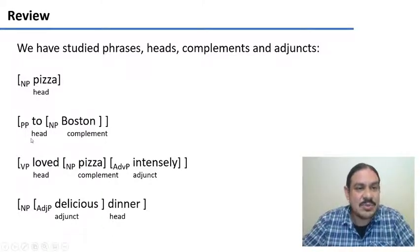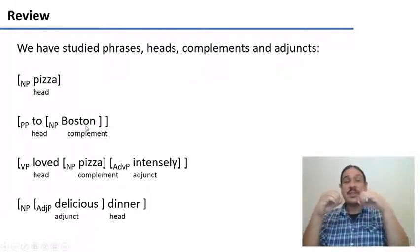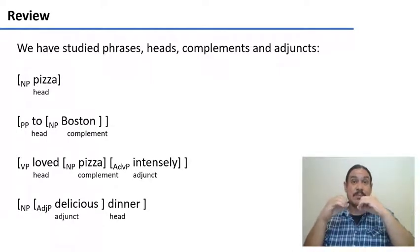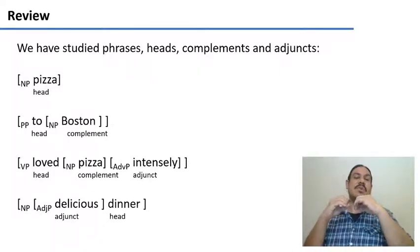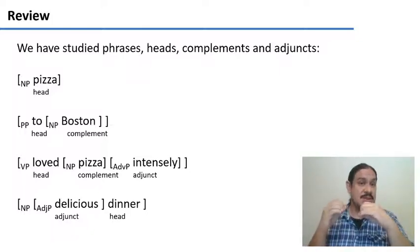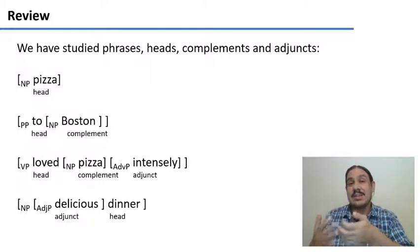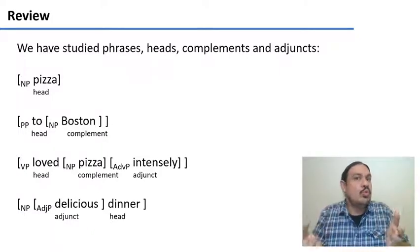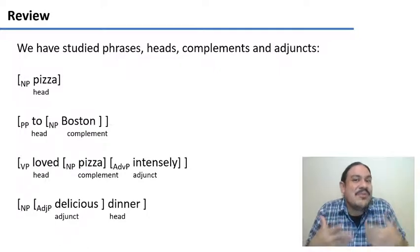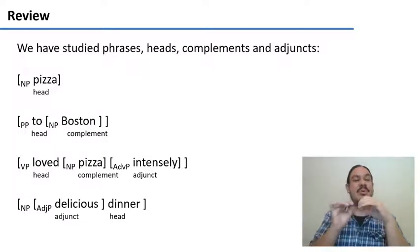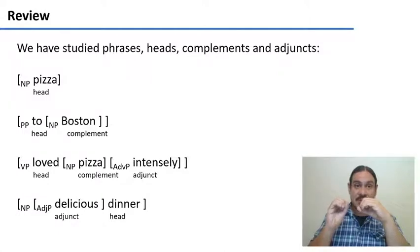We studied heads and we also studied complements, which are additional pieces of meaning that are necessary for the head to make sense, to be a complete phrase. For example, if you have a prepositional phrase like 'to Boston,' the head is the preposition 'to.' But that head cannot stand on its own — you cannot say 'to' and have it be a complete phrase of English. You always need to say where you're going to. So this additional bit of information needed to complete the meaning is called a complement.